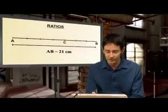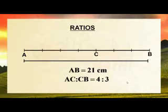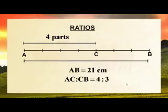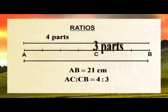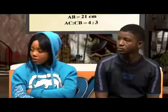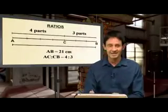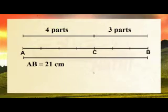But here comes a big problem. Check this out. If we say AC to CB is 4 to 3, be very careful here. What does this mean? AC is 4 parts and CB is 3 parts. Would you agree that 4 plus 3 does not equal 21? 4 plus 3 is 7. Now, careful — many students mess this up. The length of AB is 21, but you've got 4 parts to 3 parts. AB does not equal 7.